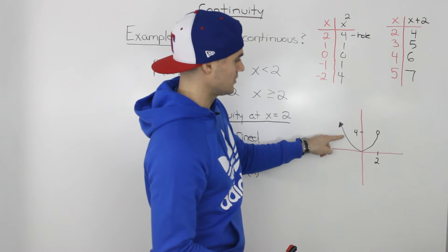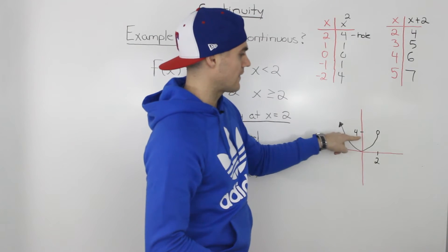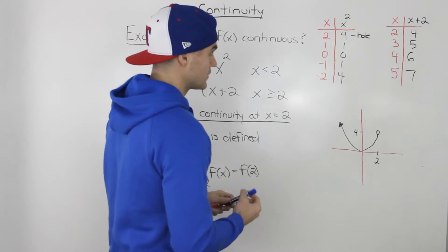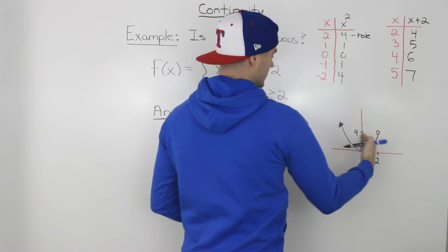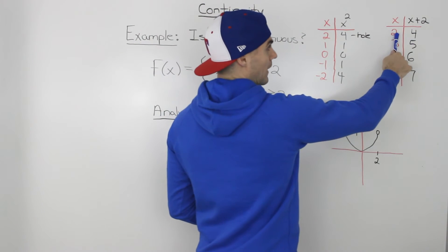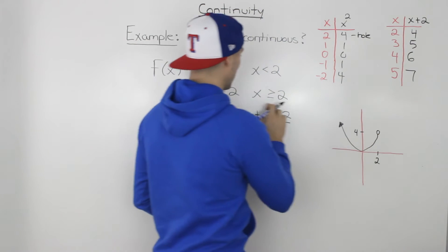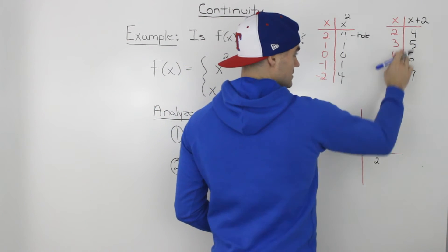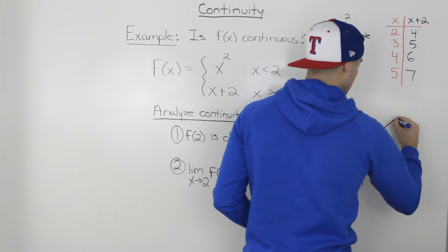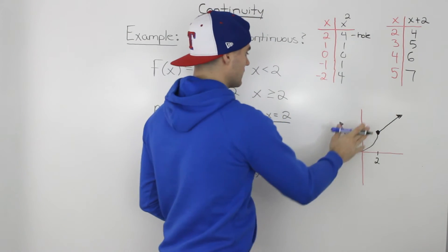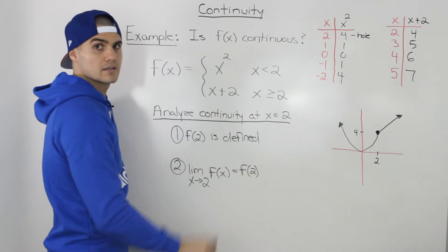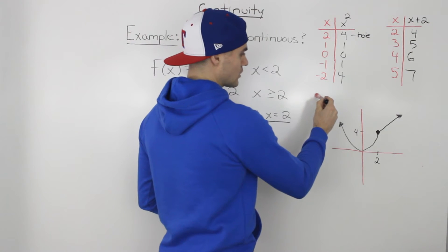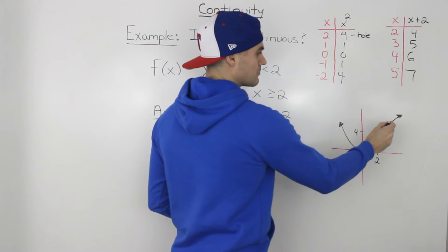Graphing this, the first piece is a parabola ending at x equals 2, y equals 4, with a hole there since it's not defined at that point. The second piece, for x values greater than or equal to 2, also has a y value of 4 at x equals 2 — but this time it's defined, so we put a solid dot. The rest of those points form a line.